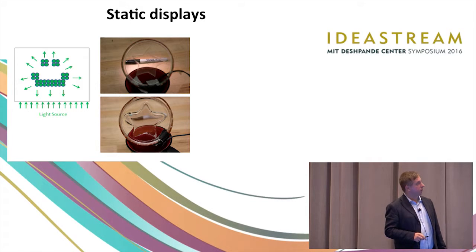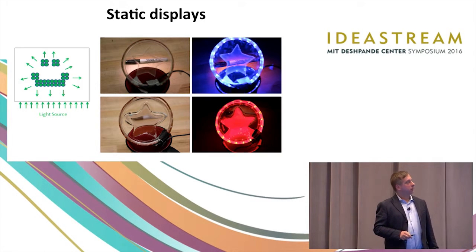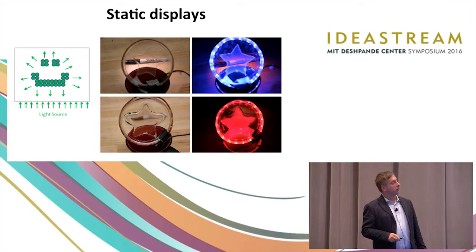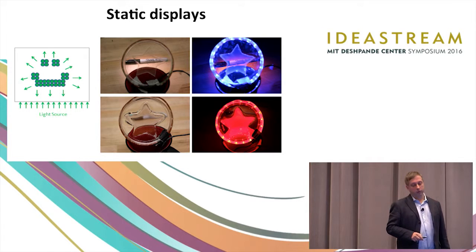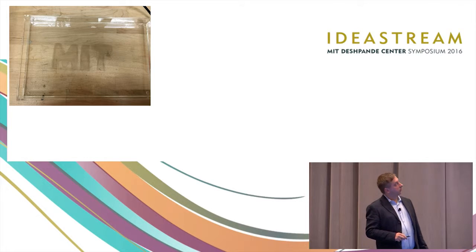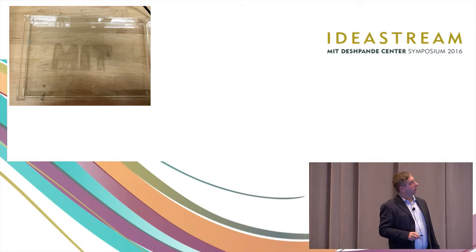So to show you how this looks like before it's illuminated, you can see this shape of a star. In principle, you wouldn't even have to see that shape. But then when you light it up, actually you can see, in this case, a blue star, or in this case, a red star. Or here, you can see a sign of MIT.